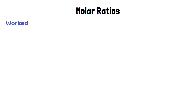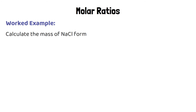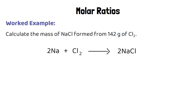In some reactions, chemicals don't react in a one-to-one ratio — you might need twice as much of one chemical as the other. For example: calculate the mass of sodium chloride formed from 142 grams of chlorine. Notice there's a 2 before sodium and no number before chlorine, meaning for every 2 moles of sodium, only 1 mole of chlorine reacts. There's also a 2 in front of sodium chloride, meaning for every mole of chlorine we make 2 moles of sodium chloride.